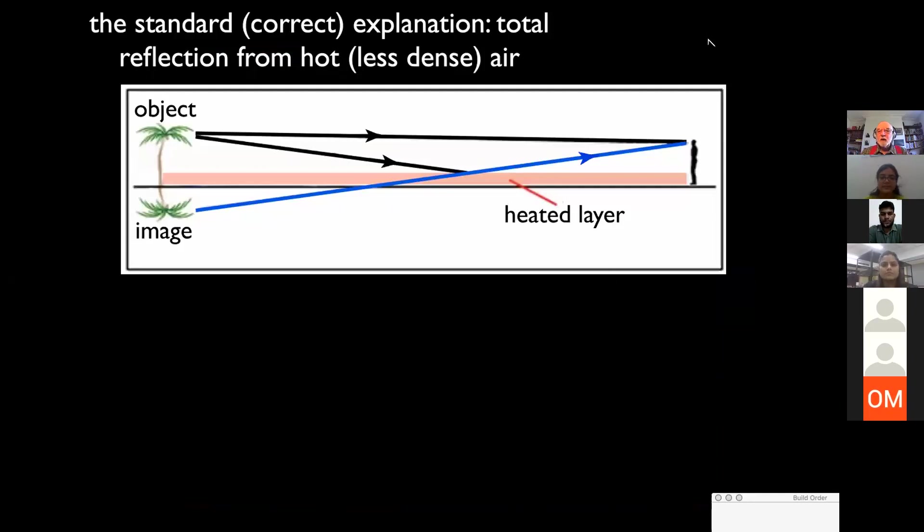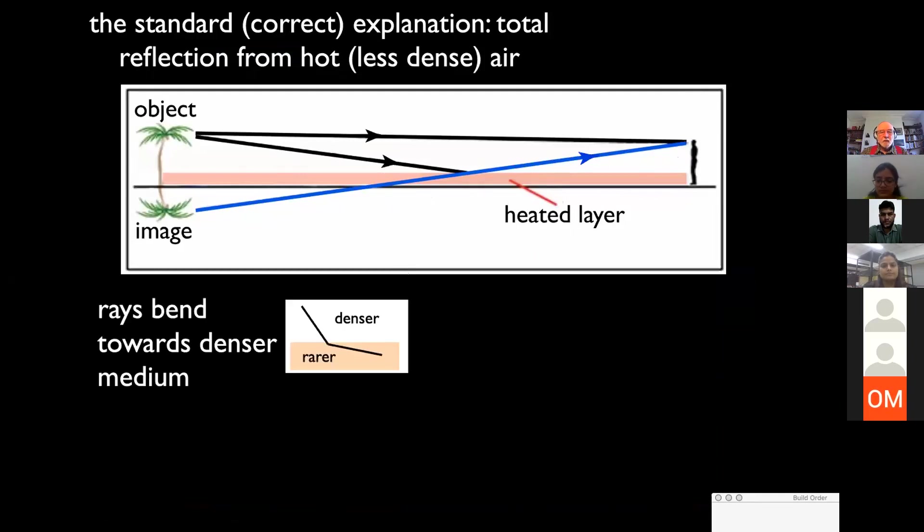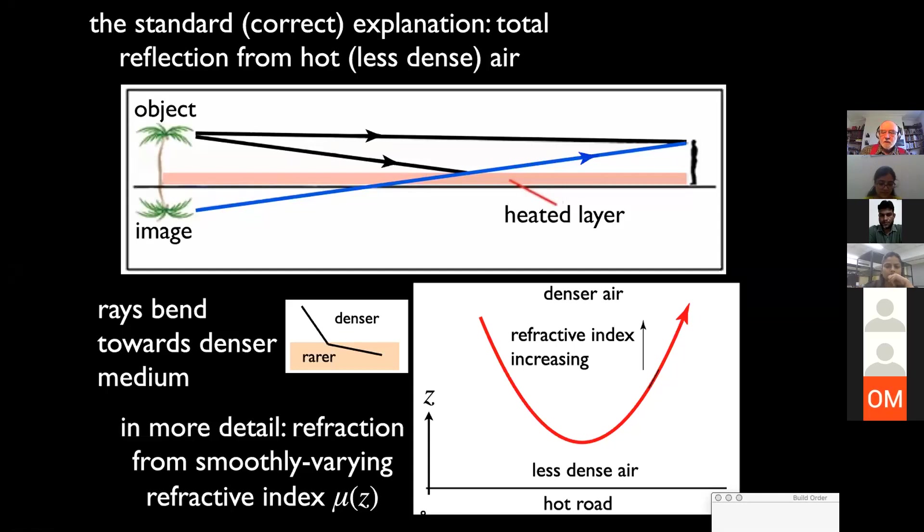So here's the picture. You see the viewer seeing the object directly, but also reflected from the heated layer. The mechanism of this refraction is that rays bend towards a denser medium, and the denser medium is the cooler air above the hot road. Locally, it's a smooth bending, but it gives the illusion of being reflection from a sharp mirror.